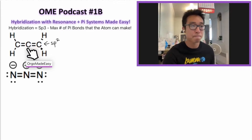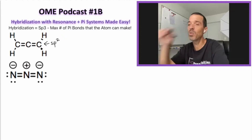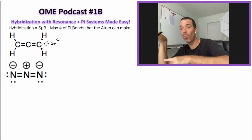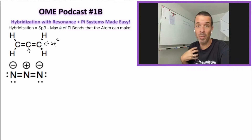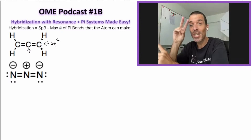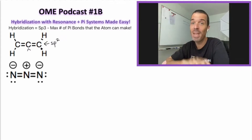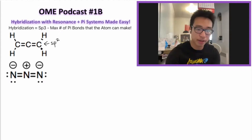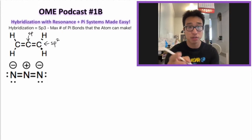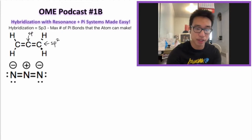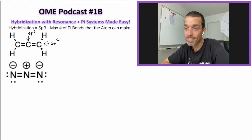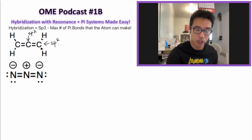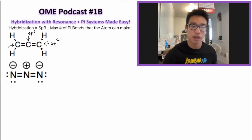What about the central carbon? It looks like there's a double bond on one side and a double bond on the other. Sticking to the formula: sp3 minus two max pi bonds gives sp. We also need to do a check for secret resonance, like we saw in the last problem. Let's analyze the left carbon — sp2 as well, since it has one pi bond.